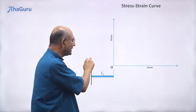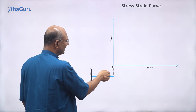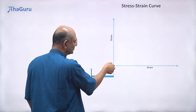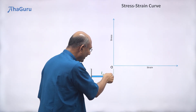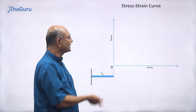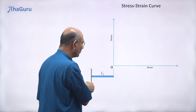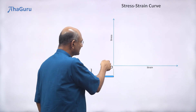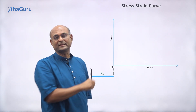Let us start when strain is zero and stress is zero — that is the origin. At this point there is no force, so stress is zero, and there is no extension, so strain is also zero. The origin correctly represents this initial state.